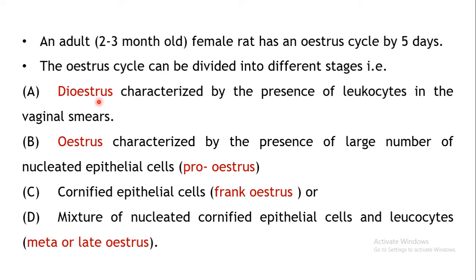The first stage is the diestrus stage, characterized by the presence of leukocytes in the vaginal smear. If you see a large number of nucleated epithelial cells, this indicates the rat is in the estrus or proestrus stage. Cornified epithelial cells indicate the frank estrus stage. A mixture of non-nucleated cornified epithelial cells and leukocytes indicates the meta or late estrus stage. These are the 4 different stages, characterized by different types of cells.